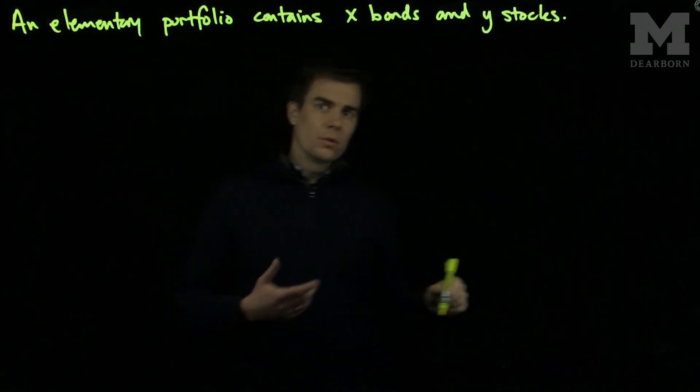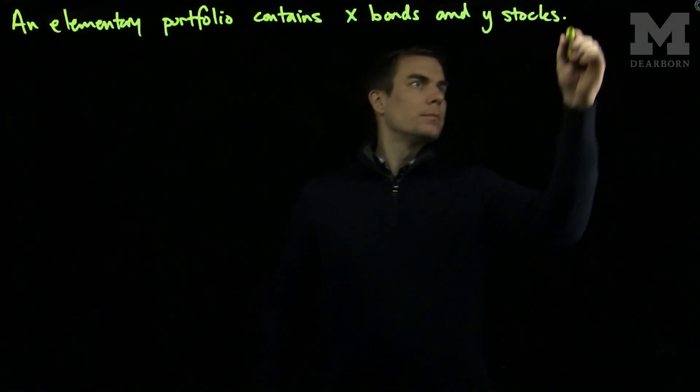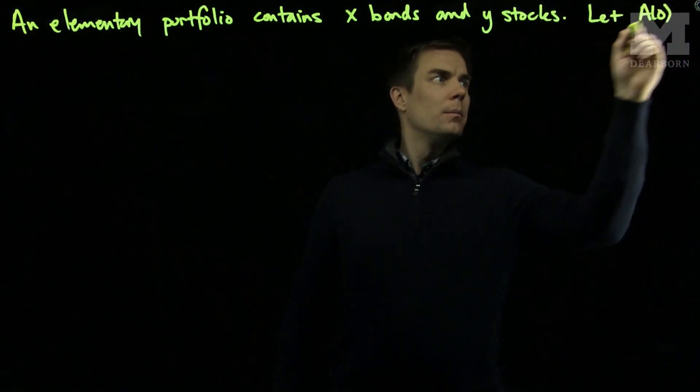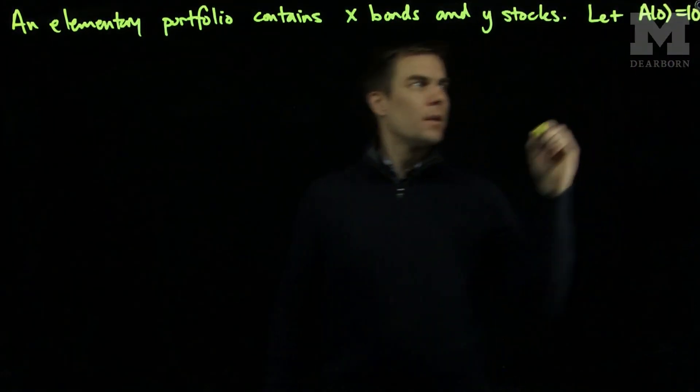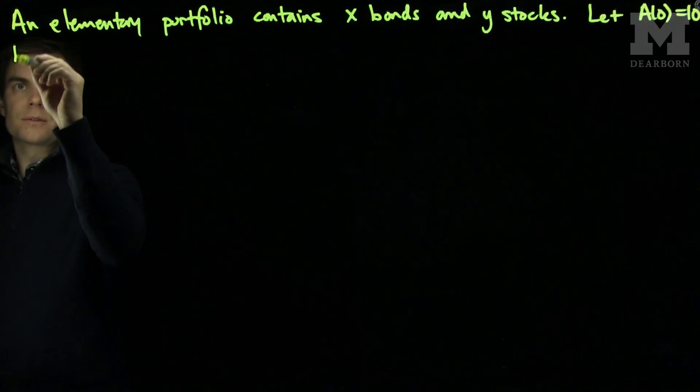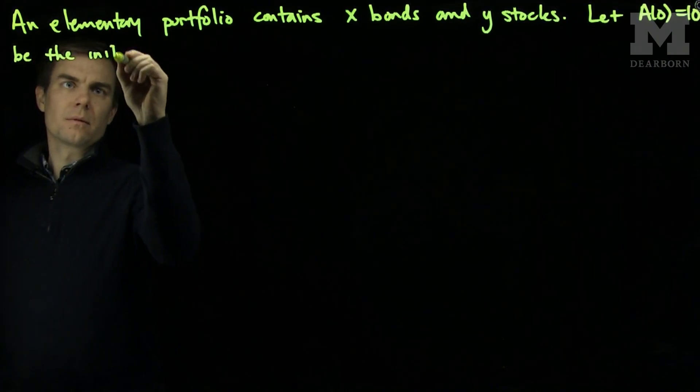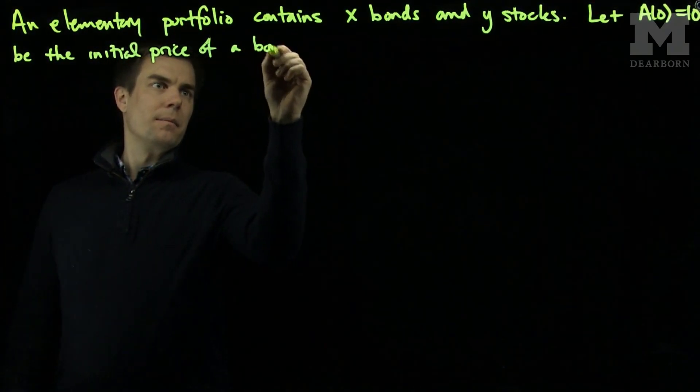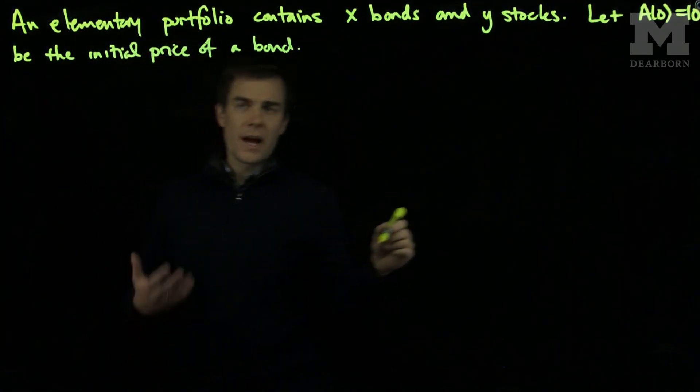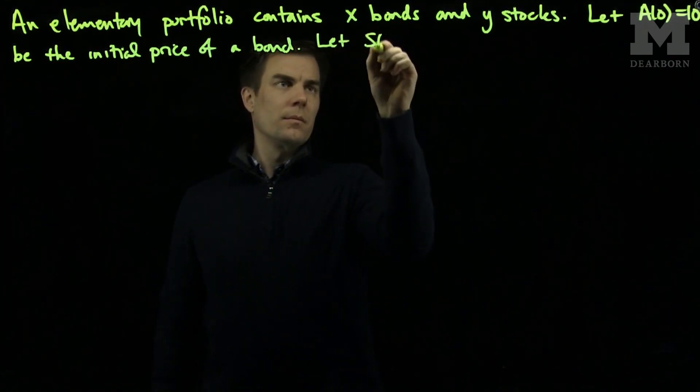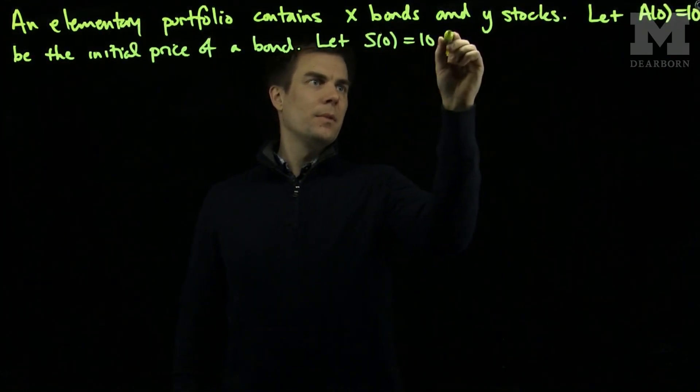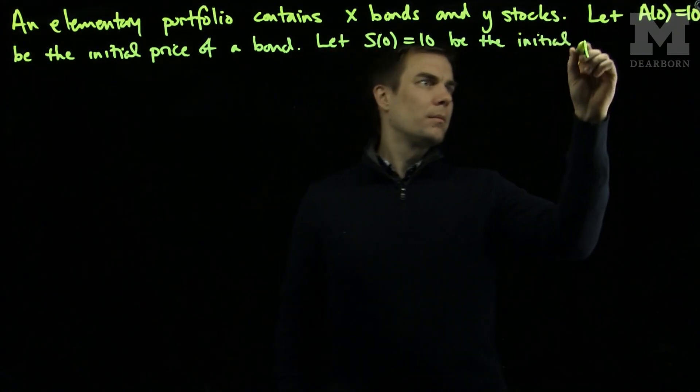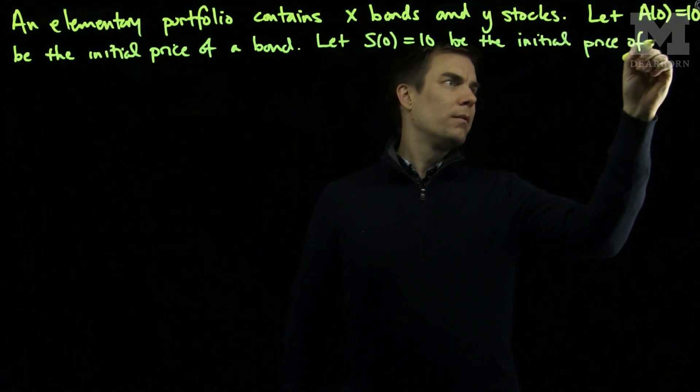What we'll do is we'll let A(0) be 10, and this will be the initial price of a bond. And we'll let S(0) also be 10, the initial price of a stock.